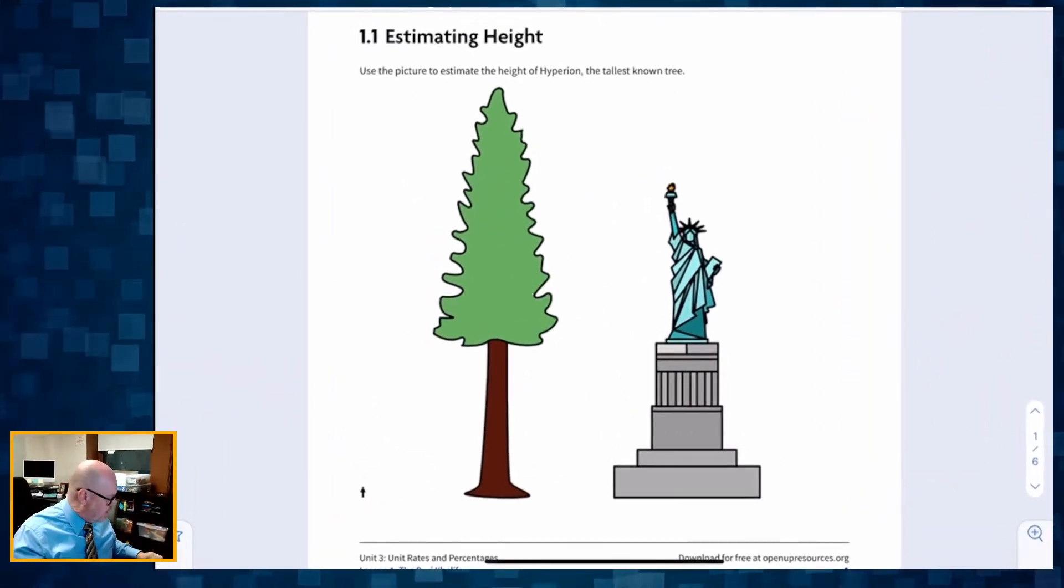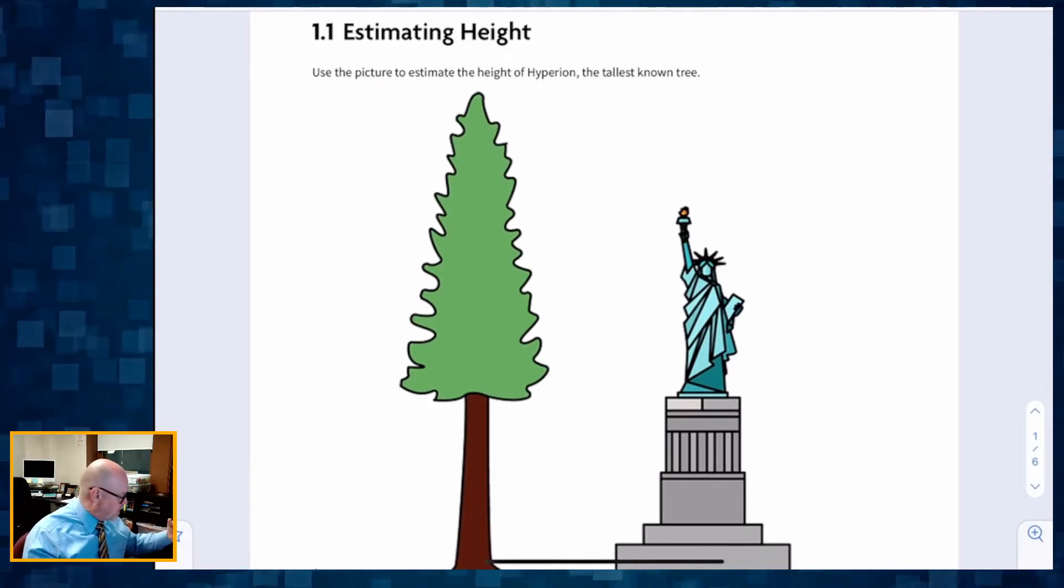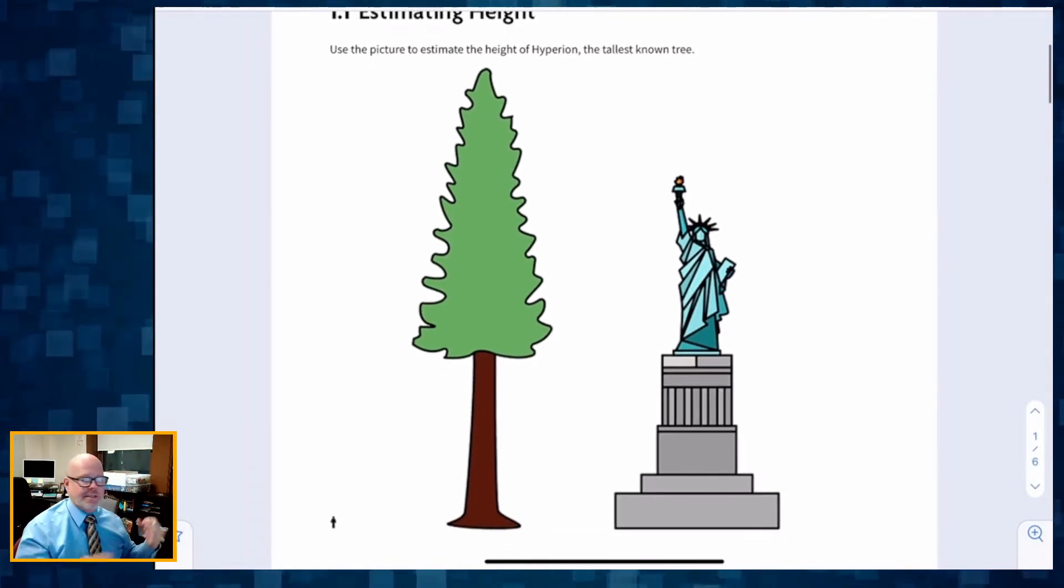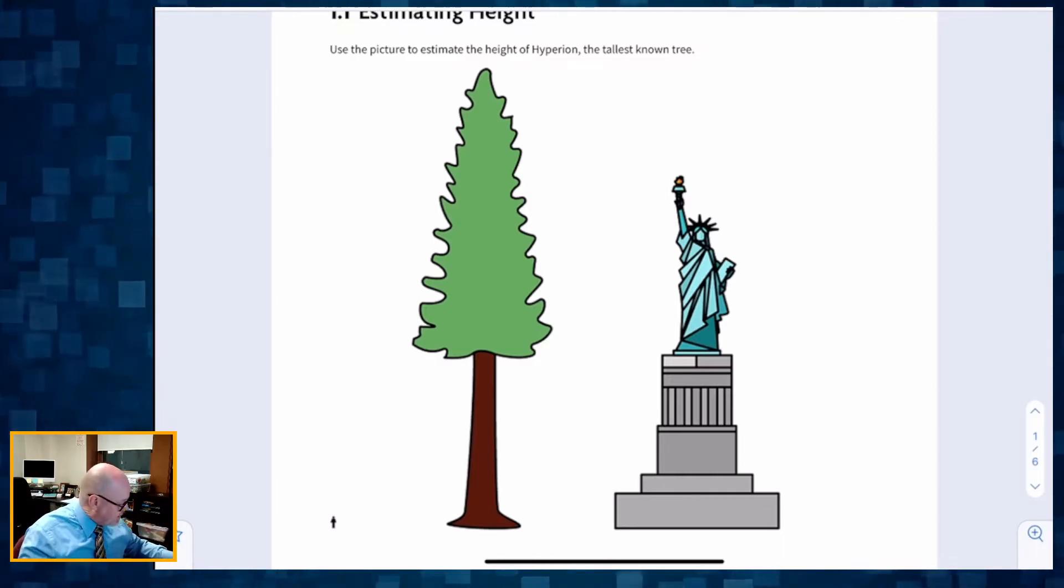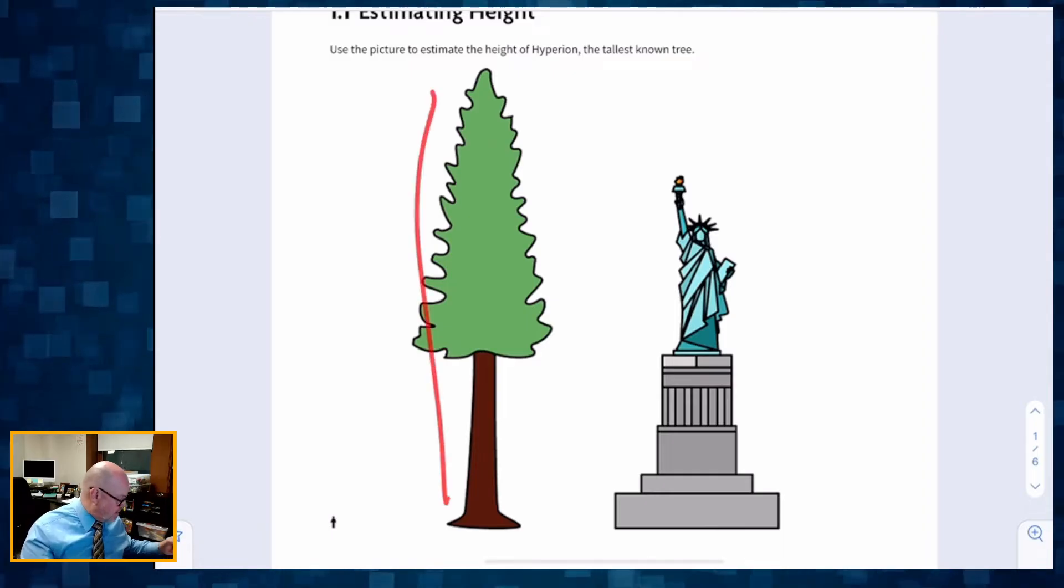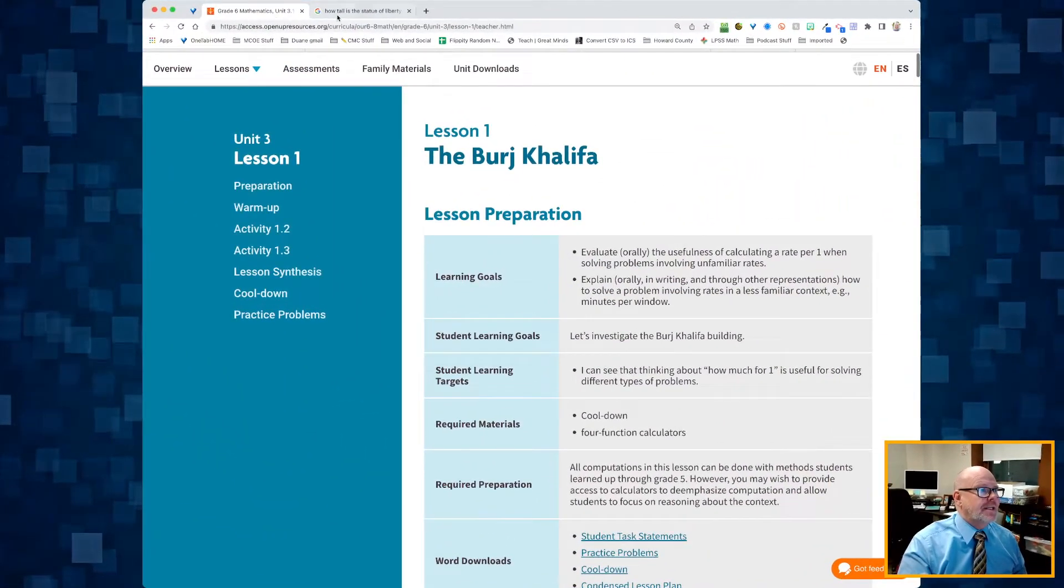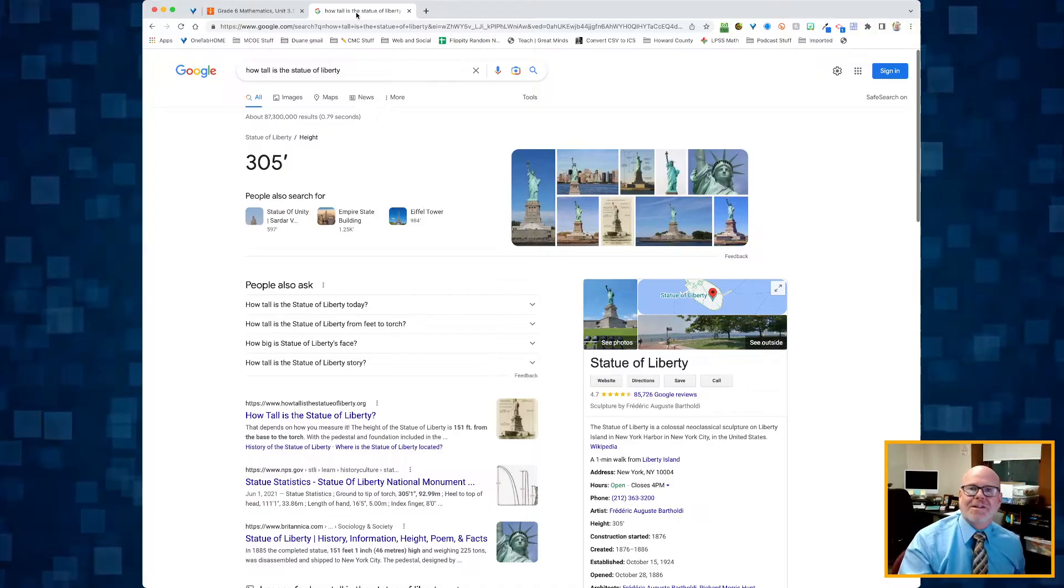We begin with our warm-up, and our warm-up talks about estimating the height of the Hyperion. I guess it's a tree, right? And they give us this Statue of Liberty as our reference point. So the idea is, since it's putting the Hyperion up against the Statue of Liberty, our job is to estimate the height. It's not much of a hint if you don't know anything about the Statue of Liberty. So I had to look it up, so I did.